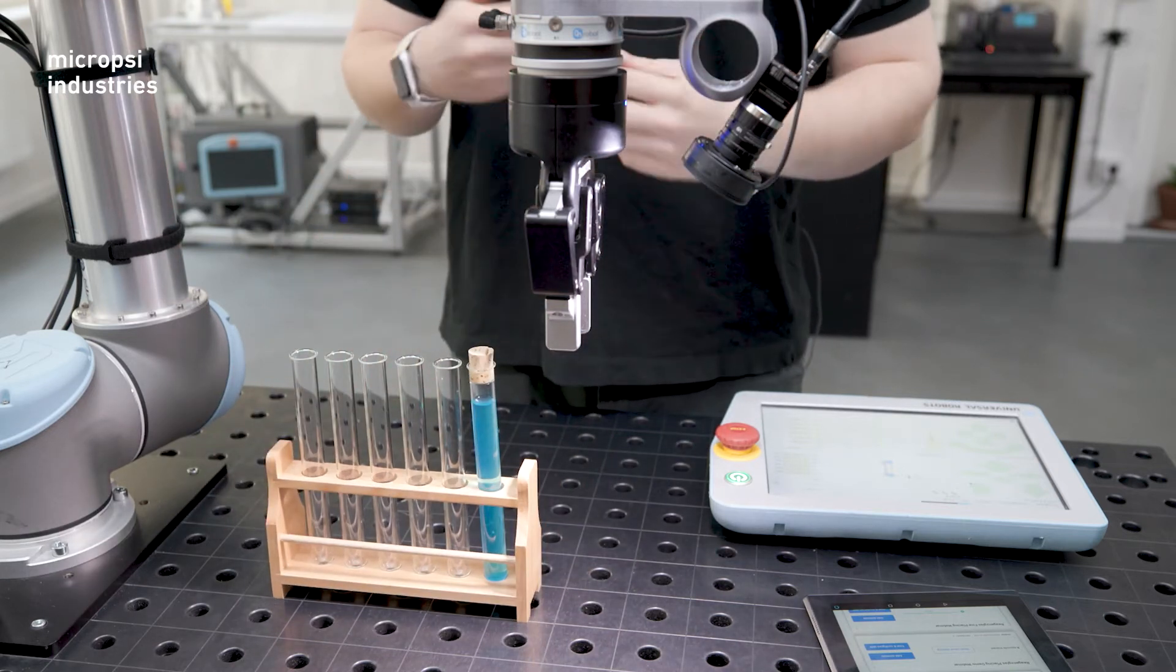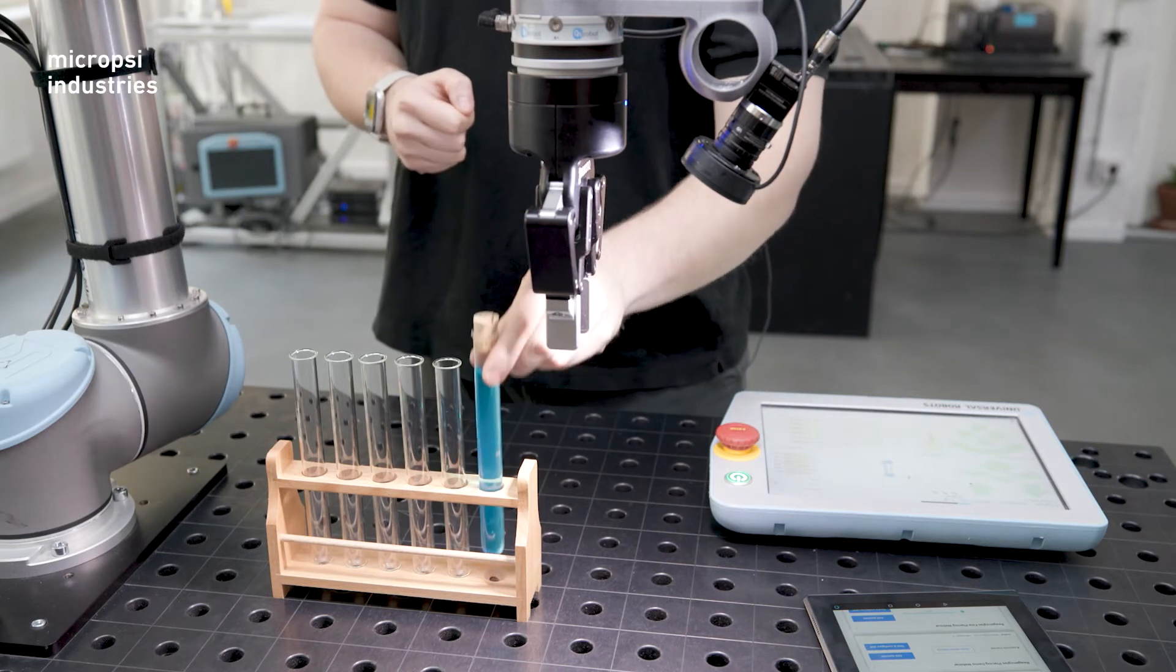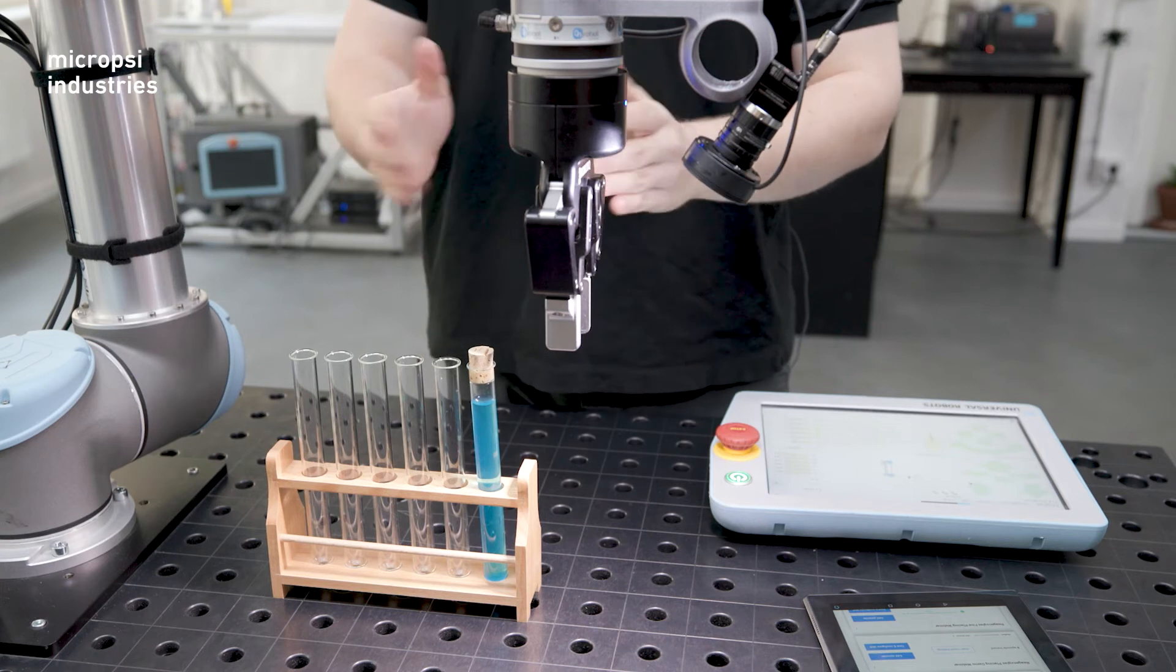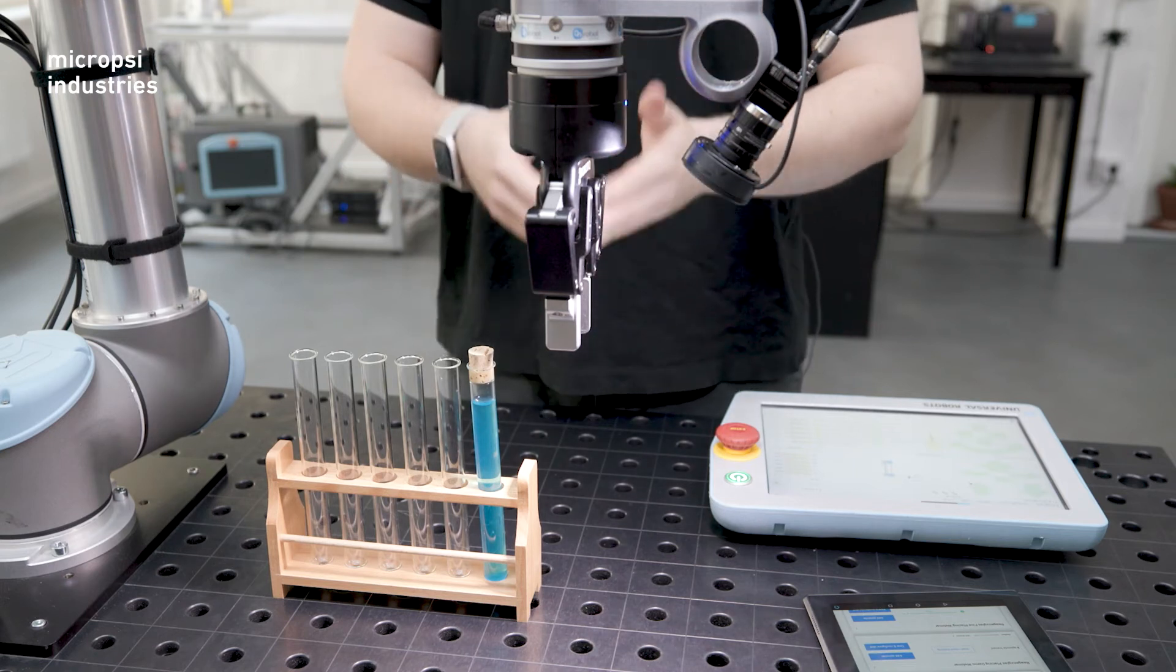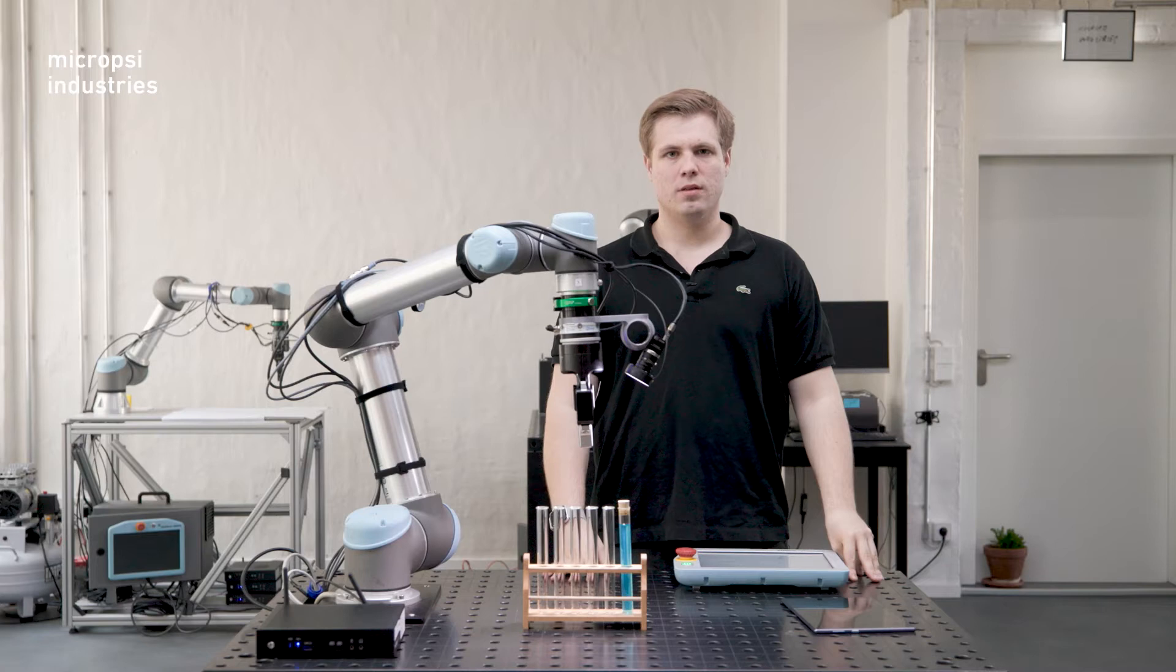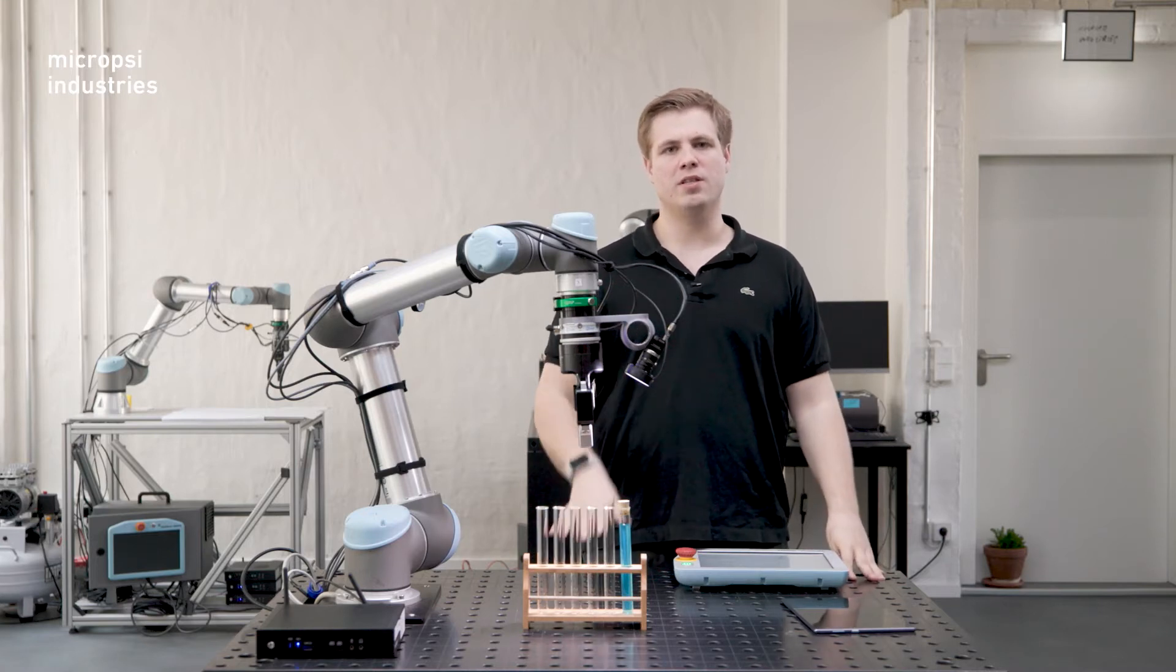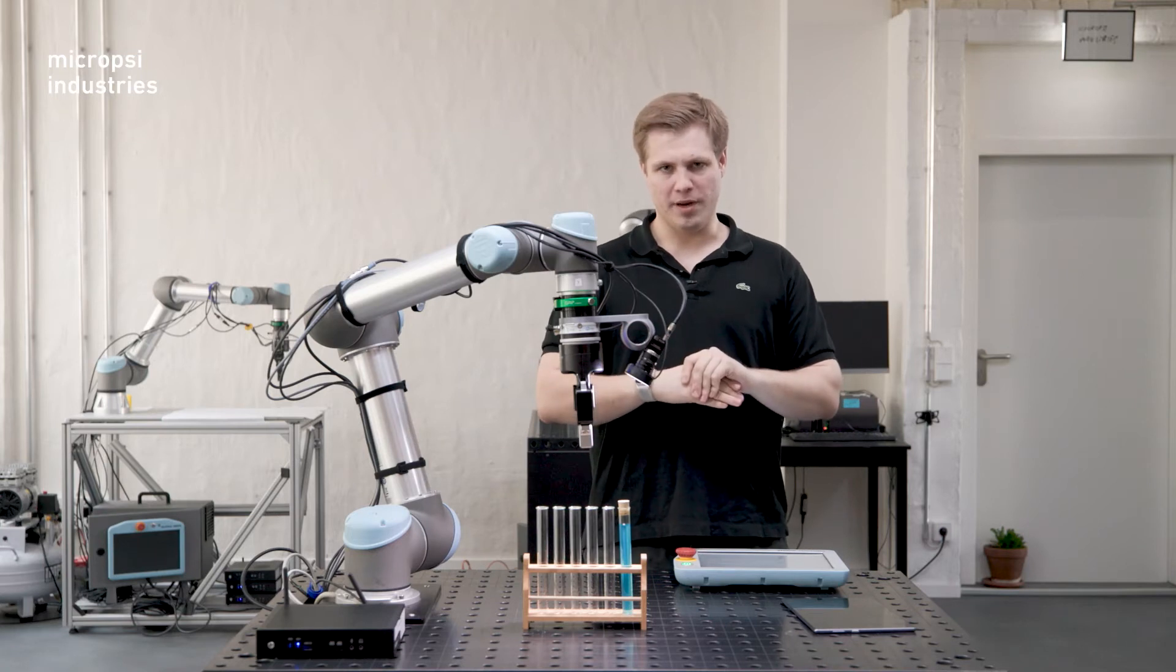Not only that, the beakers can vary visually, just like here. This means that an automation solution with the vision system would also have a hard time making sense of the scene. Thankfully, with Mirai, we can train the robot to handle this specific section of the overall pick-and-place task.